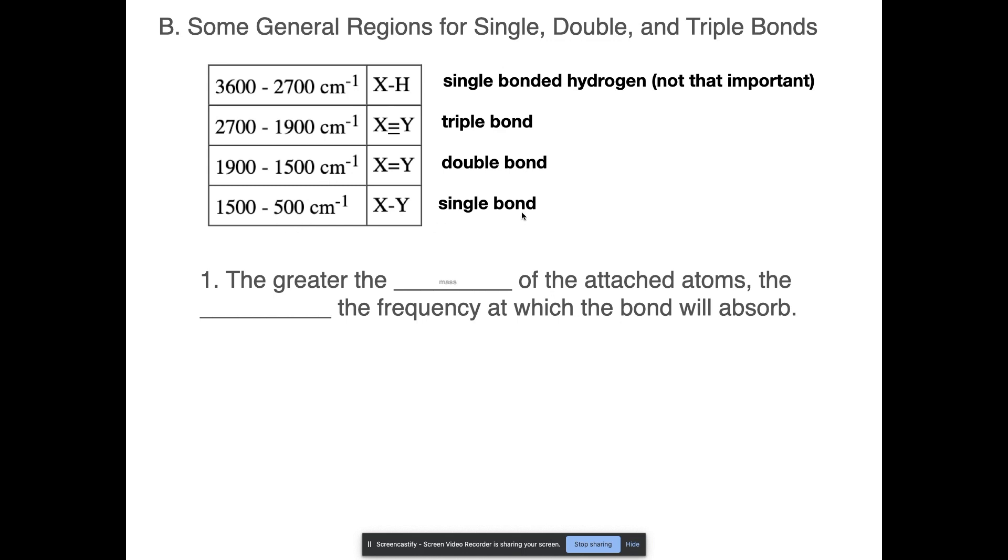Now, the greater the mass of the attached atoms, the lower the frequency at which the bond will absorb. So what that means is that there is a direct correlation between the mass of whatever atom we're looking at, in this case X or Y, and what frequency we actually see that absorption happening at.